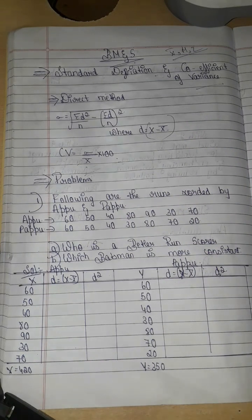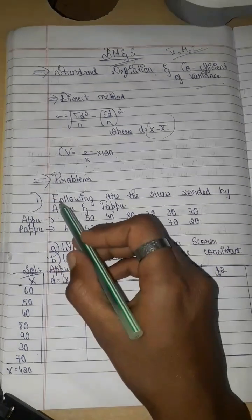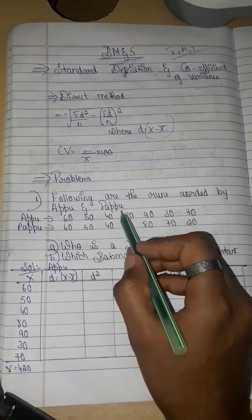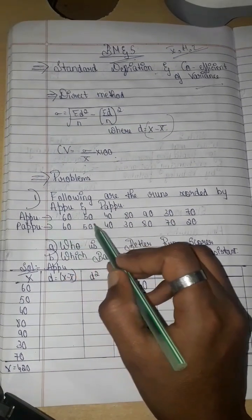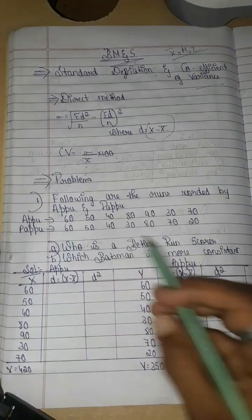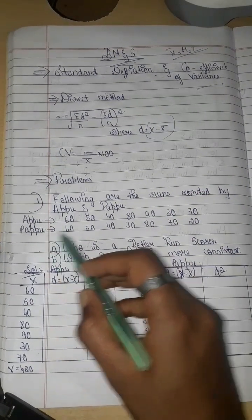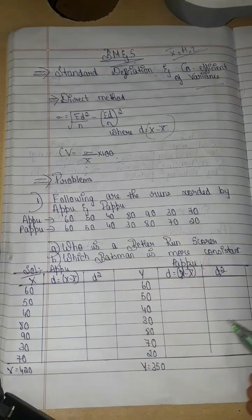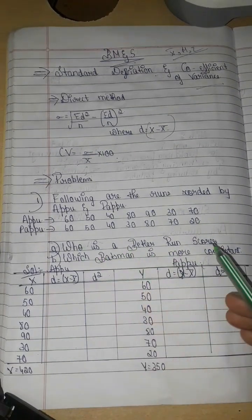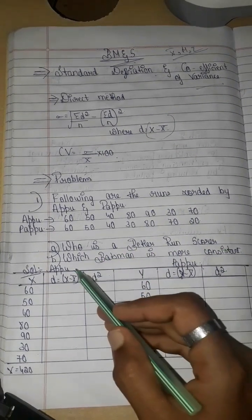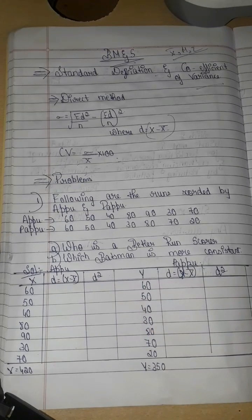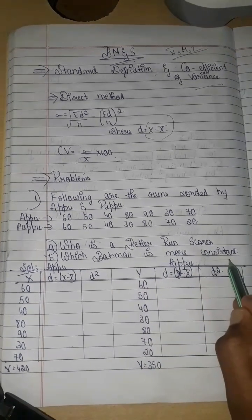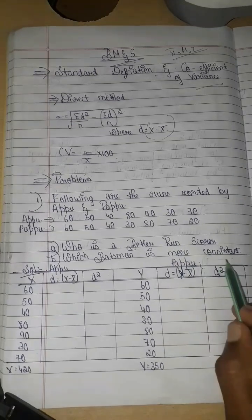I will explain the problem. Here is a question: following are the runs scored by Apu and Papu — Apu's information and Papu's information. Who is the better run scorer? Which batsman is more consistent? We will find out using standard deviation.